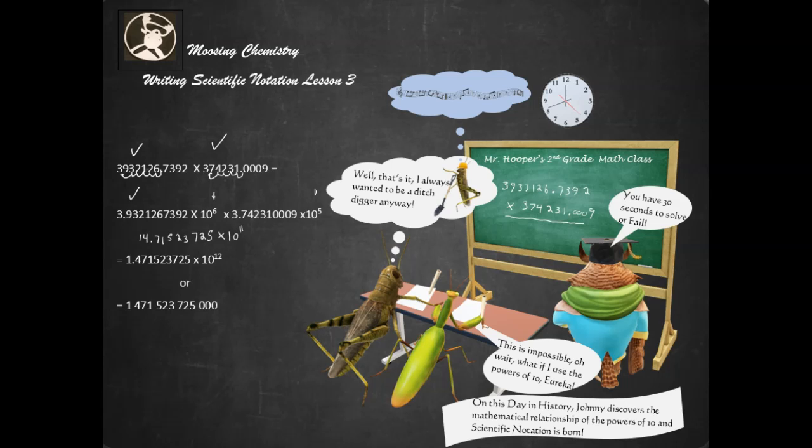So this is going to give you 14.71523725 times 10 to the 11th. But however, you have to remember that you cannot have two numbers to the left of the decimal in scientific notation. So you're going to do this one more time over and that 11 is going to become 12 which gives us this number.